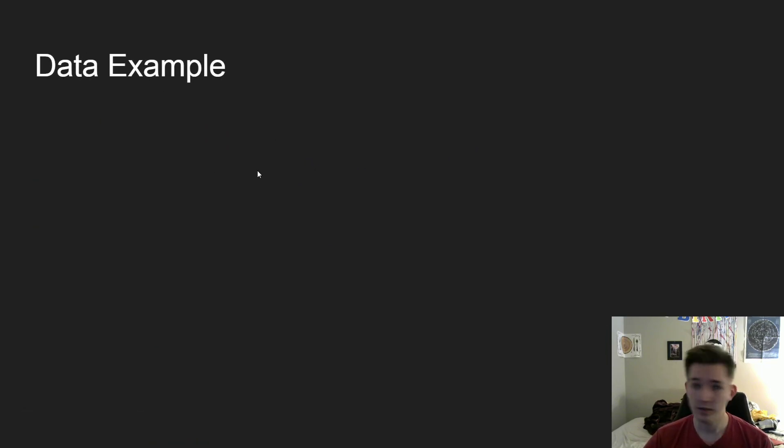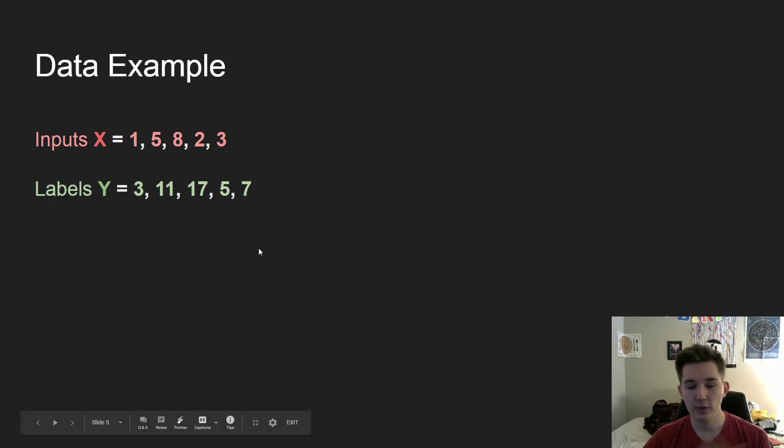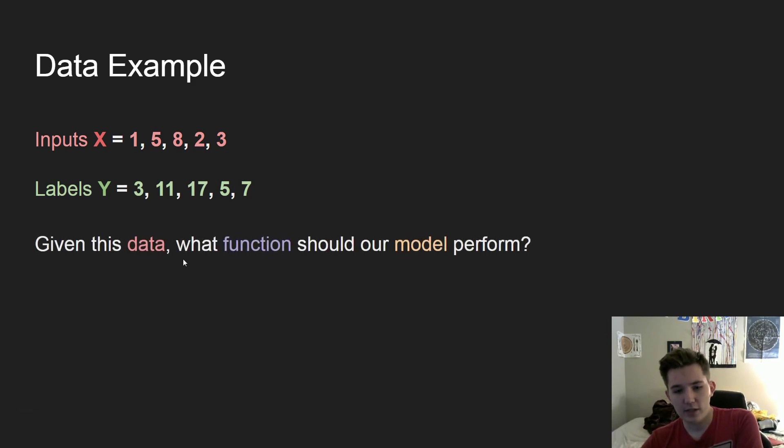So let's look at an example of doing this. So let's say that we have these inputs, just these numbers, 1, 5, 8, 2, 3, and we have the corresponding labels as 3, 11, 17, 5, and 7. And we can think just like, as us, not having our model do anything yet, given this data, what function should we have our model perform?